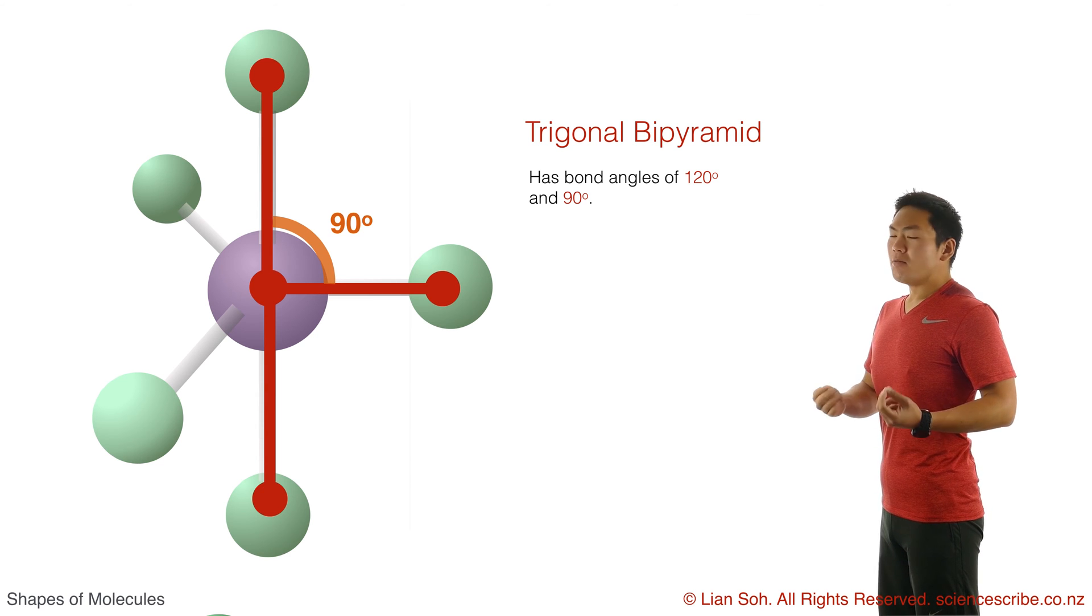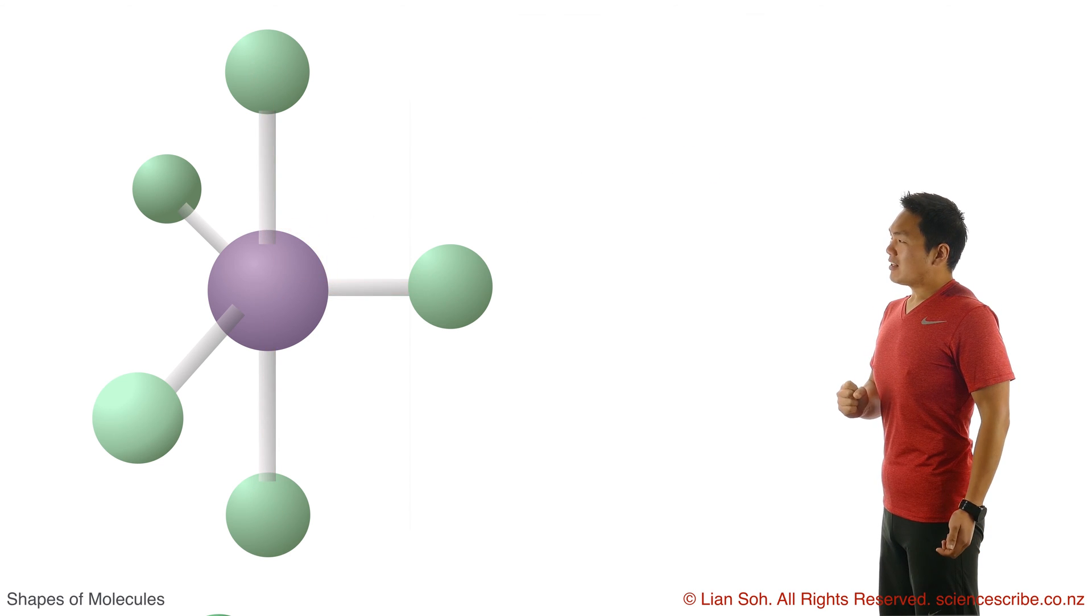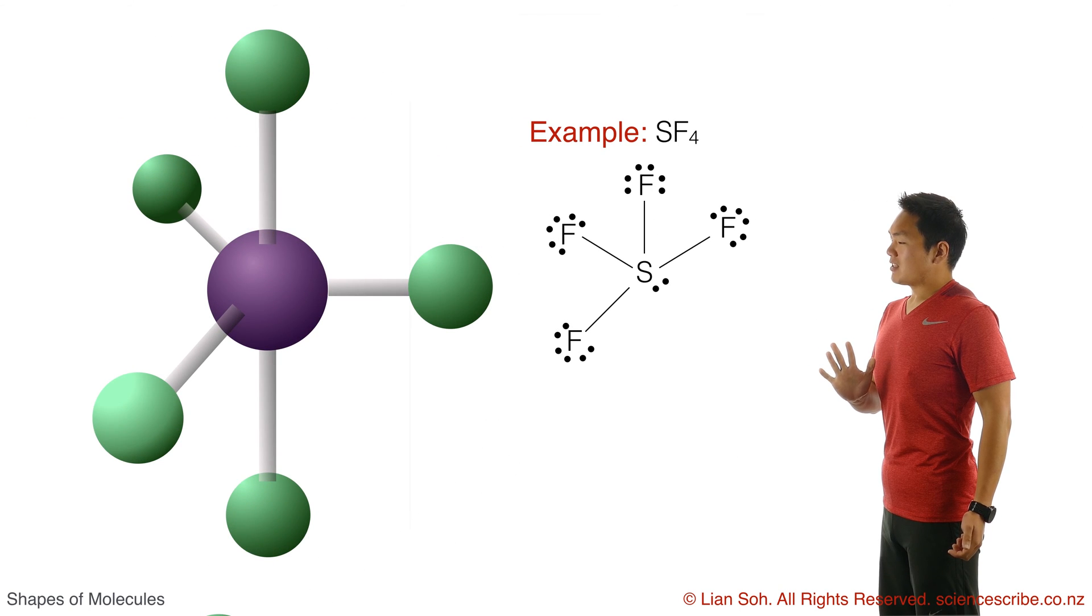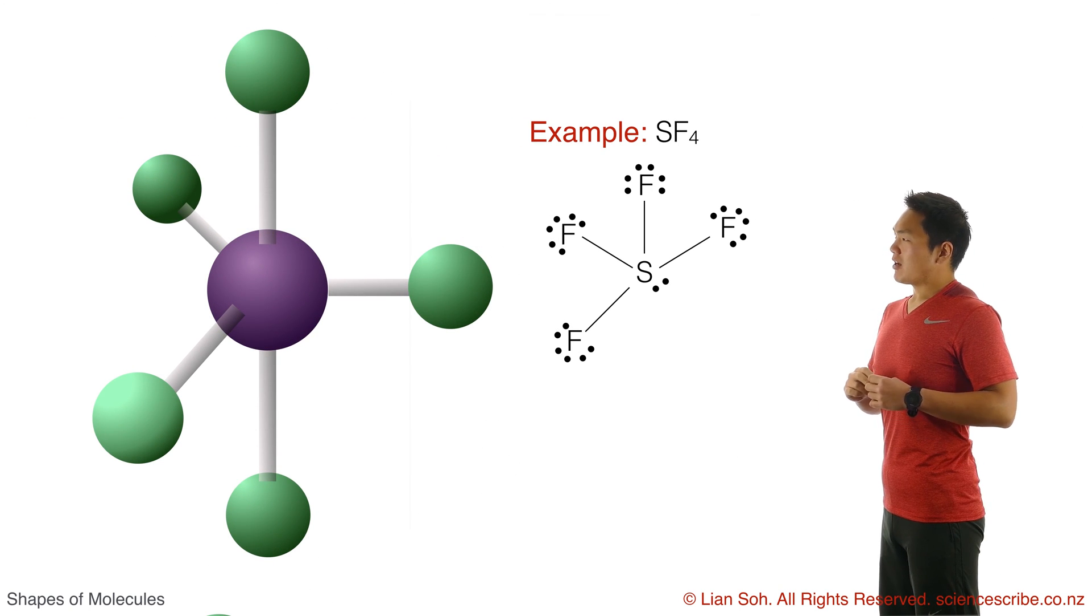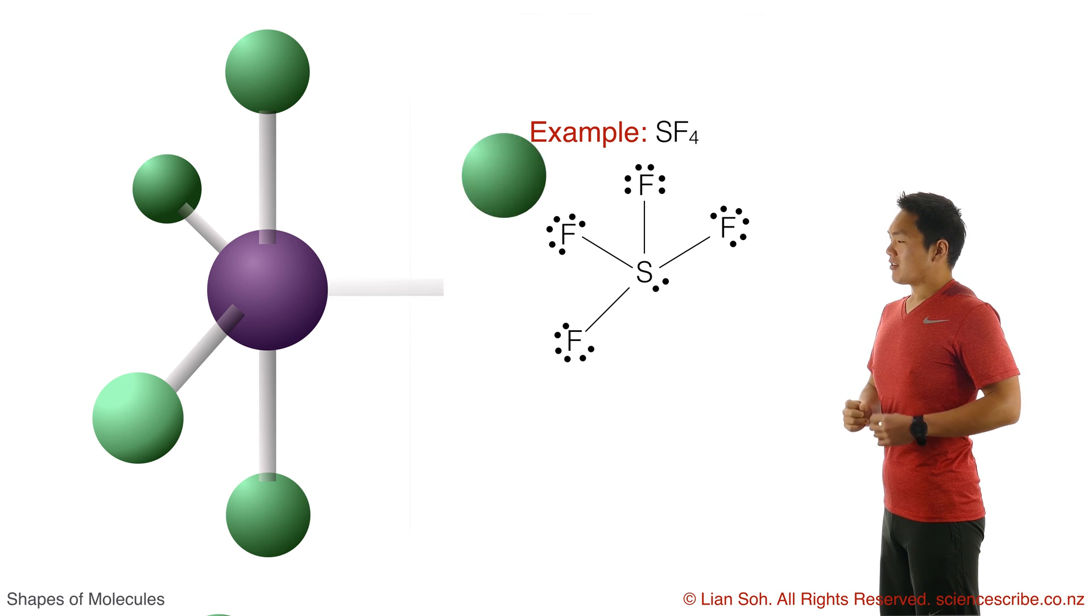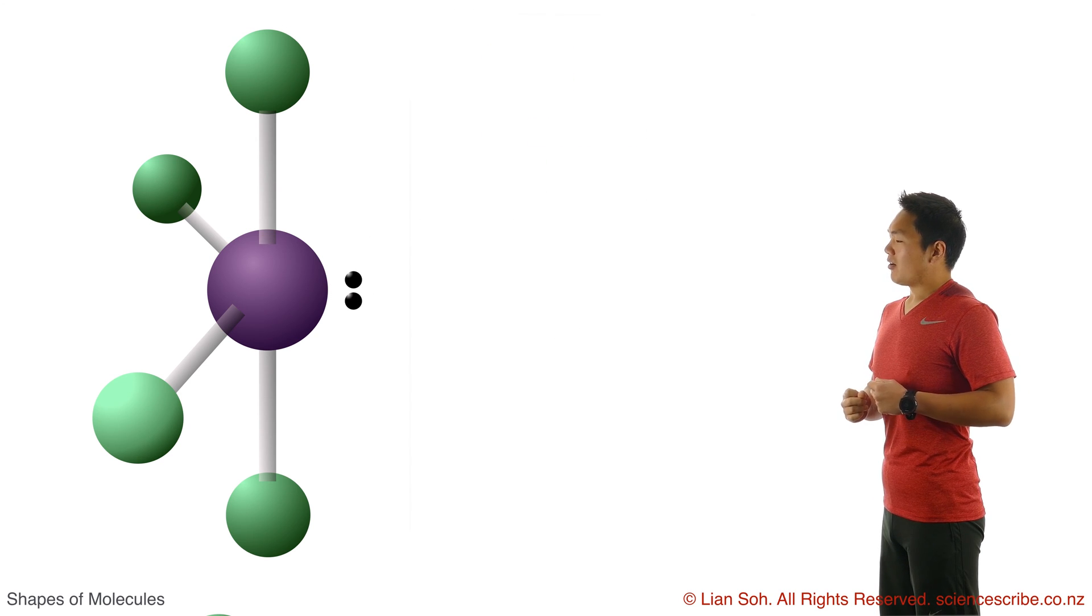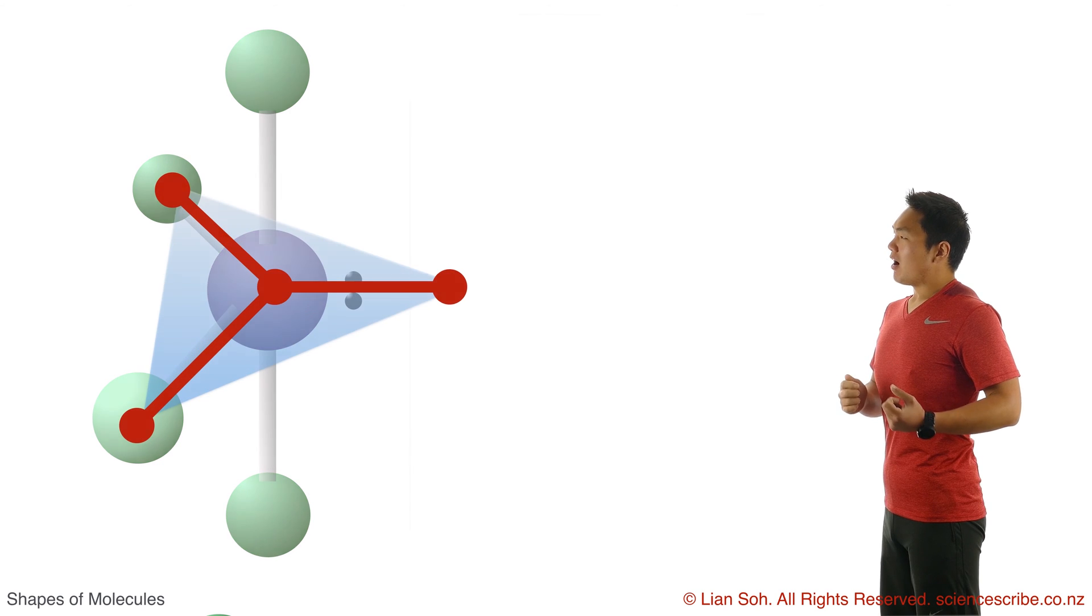Now moving across one, let's say you still have five regions of electron density, but this time you've got a lone pair. To remember this shape, I want you to think of replacing those regions of bonding electrons with lone pairs as you're moving across. So when I go ahead and do that,